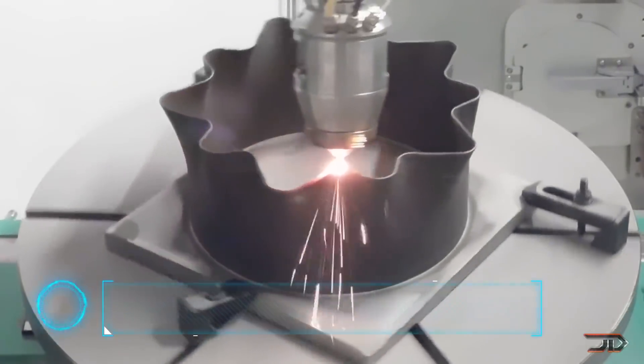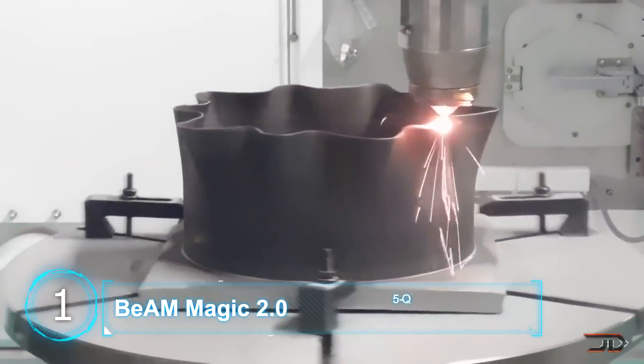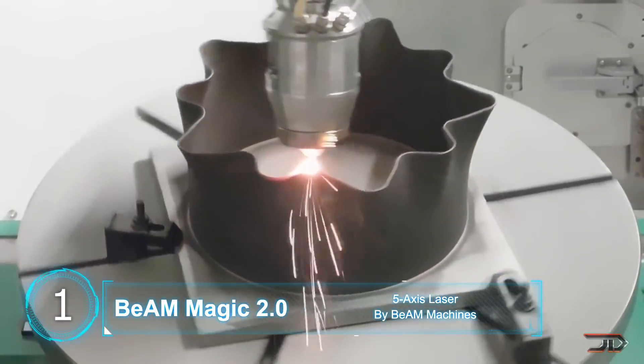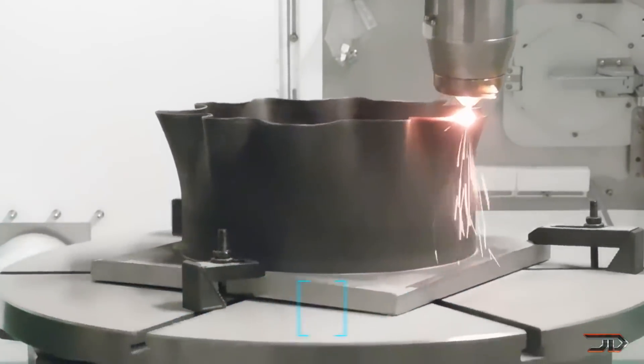At number 1, the Beam Magic 2.0. A lot of metal 3D printers unfortunately utilize long building processes, just like the last one, and most require big furnaces in order to cure the print.